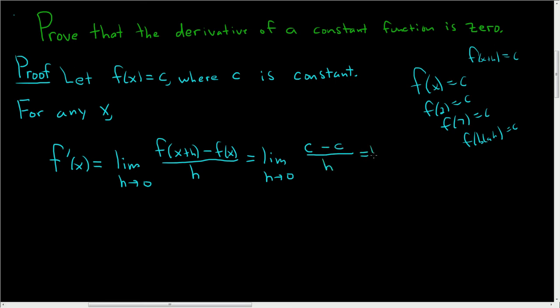So this is the limit as h approaches zero. Well c minus c is zero so we get zero over h. So this is equal to the limit as h approaches zero of zero, and that limit is just zero. So f prime of x is equal to zero. And this is true for any x. We did not use x at all. So that proves that the derivative of a constant function is zero.